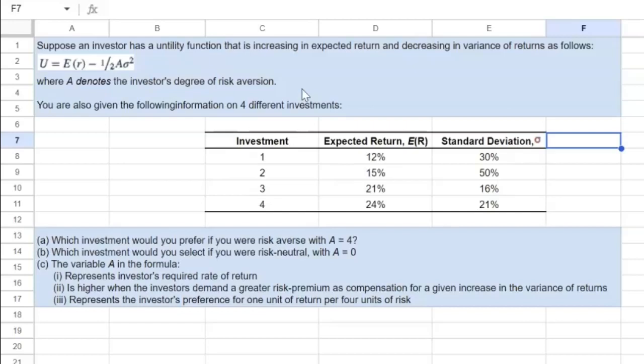And so this is basically representative of the idea that investors like returns or expected returns and they don't like risk, where risk is being captured by sigma squared.